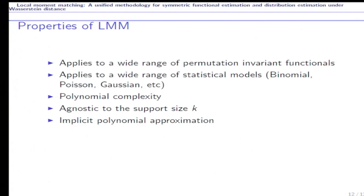And finally, we summarize some properties of local moment matching. It applies to a wide range of permutation invariant functionals and a wide range of statistical models. It has polynomial complexity. It is agnostic with support size k. And when estimating symmetric functionals, it does implicit polynomial approximation. Thank you very much.